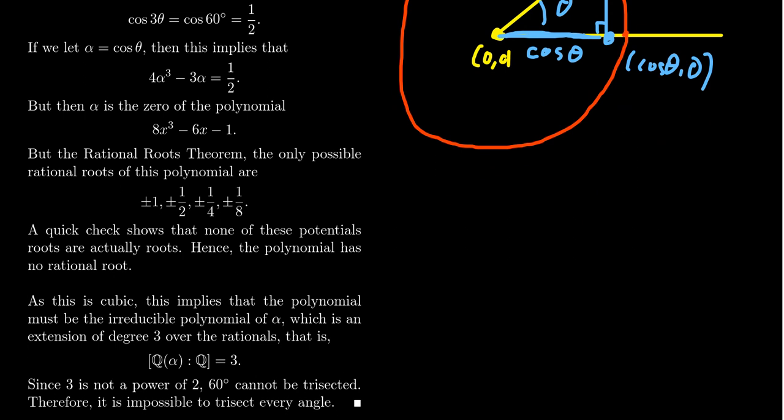By the Rational Roots Theorem, the only possible rational roots of this polynomial are the divisors of 1 divided by the divisors of 8. So you get ±1, ±1/2, ±1/4, ±1/8. I will leave it as an exercise to the viewer here to verify that none of these 8 numbers are roots of this polynomial.